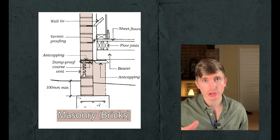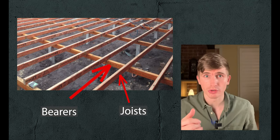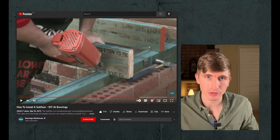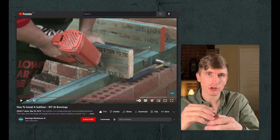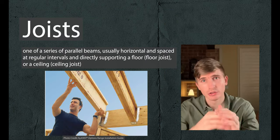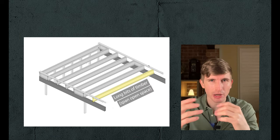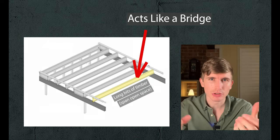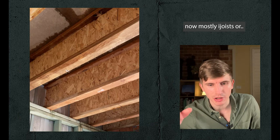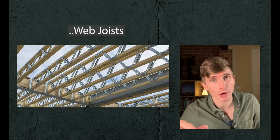On top of masonry pier construction you'll typically find bearers and joists. A bearer is a subfloor member that supports the joist — you'll typically find them on piers or posts. Joists are fixed to the bearers, sometimes on top and sometimes directly into it using hardware like these hangers. Joists create the floor structure of a house; they're long pieces of timber that span open space and act like a bridge across long distances. Joists used to be solid timber but now it's mostly been replaced by engineered timber like these i-joists and open web floor joists.